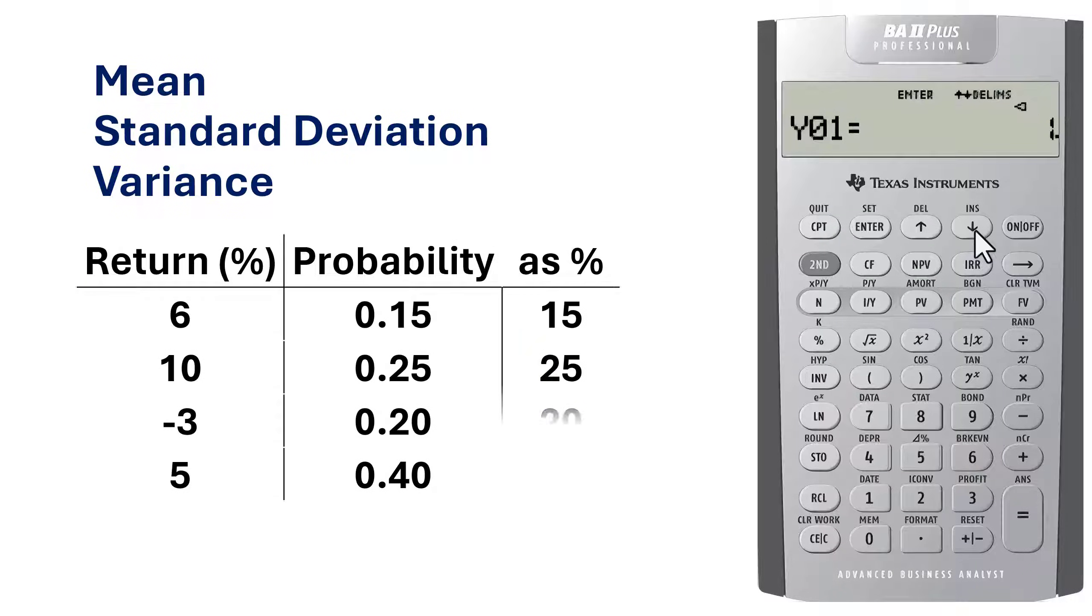Note that the probabilities must be entered as percent. If entered as decimals, the calculator will give an error when generating the results. So for Y1, input 15, not 0.15, Enter.